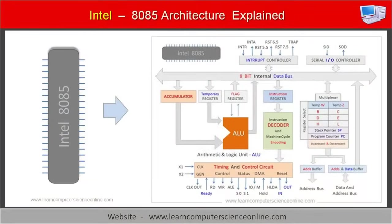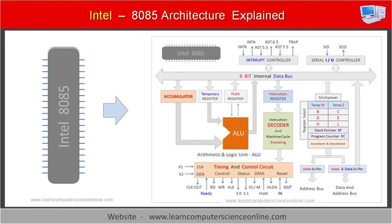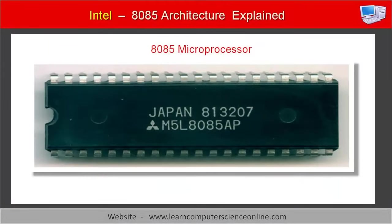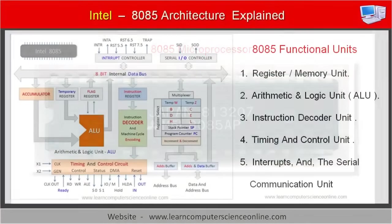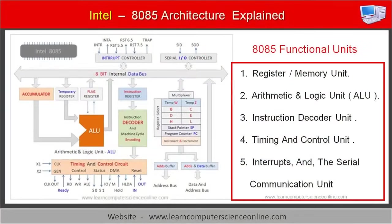The term microprocessor architecture refers to the design and layout of various functional components that exist inside the microprocessor chip, and how these functional units interact with each other when the microprocessor performs various operations. To simplify the study of 8085 architecture, we can group all microprocessor components into five major functional units, each performing a specific role.